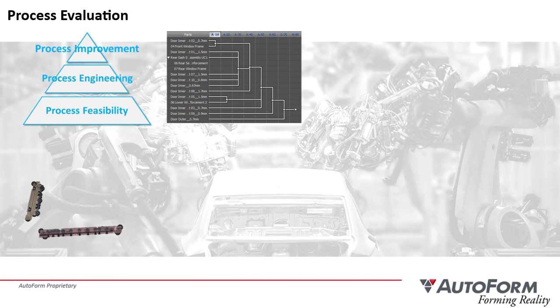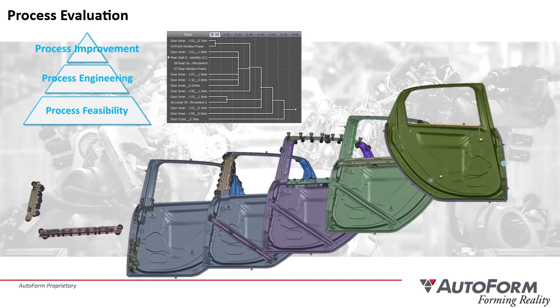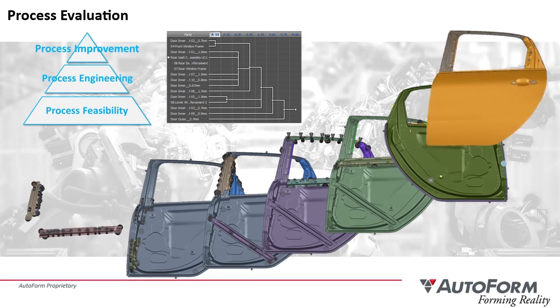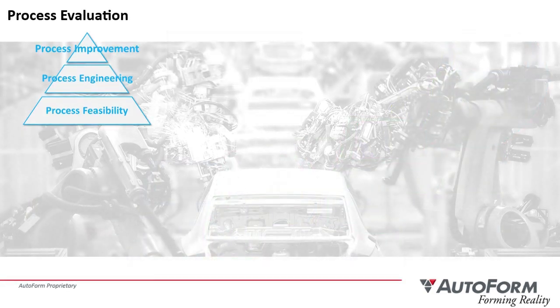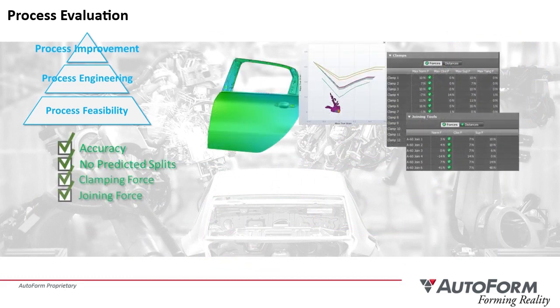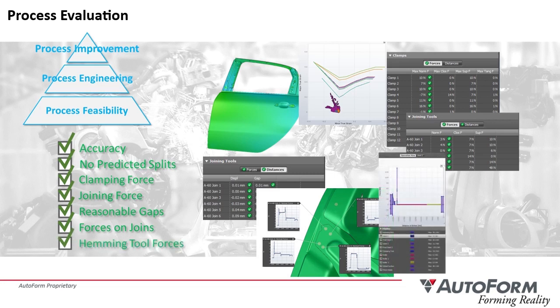For any simulation, users can study the results of each assembly process and verify critical information that may indicate success or failure. By verifying the assembly as parts are added, users can identify problem parts or processes and make strategies to resolve them. Numerous tools exist in assembly to help users validate their results, including assembly accuracy, predicted splits, requisite clamping and joining forces, gaps between parts, resulting forces at join locations, hemming tool force requirements, and surface quality analysis for potential defects.